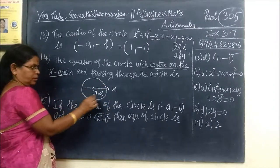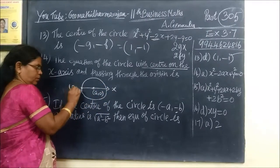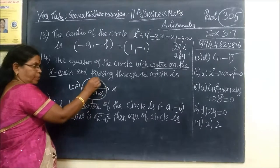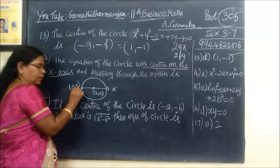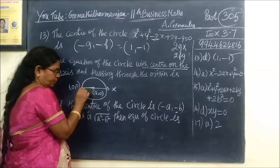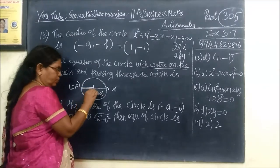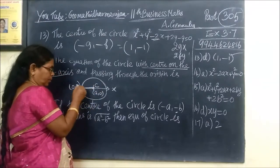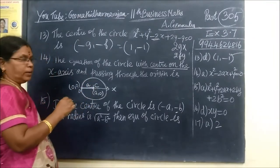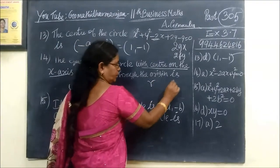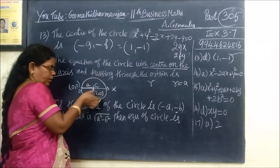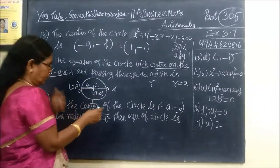That circle passes through the origin. The center is at (a, 0) on the X-axis and the point O is the origin. The distance from the center (a, 0) to the origin is 2a — wait, the radius r equals a.